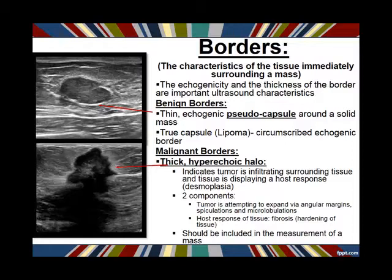Lipomas can occur all over the body and they're always encapsulated — encapsulated fat. On ultrasound, you're either going to see this thin white line around something, which — unless it's a lipoma — is going to be a pseudo-capsule, or you're going to see nothing around a mass, meaning it has no border.